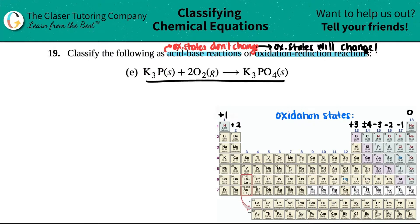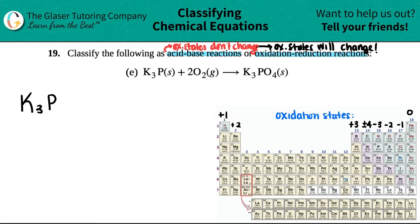Let's just always work from left to right. Let's start off with the first one: K3P. Note that the state of matter — solid, liquid, etc. — has nothing to do with finding the charges. The states have nothing to do with finding oxidation states, nor do the coefficients. You can get rid of all that and focus only on the individual compounds or molecules.